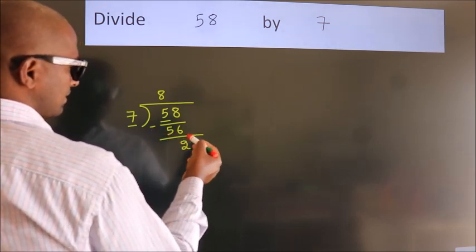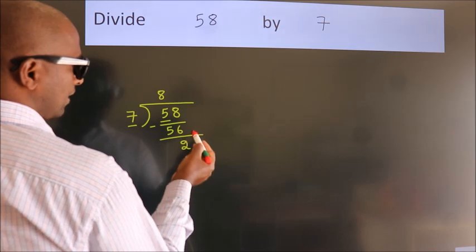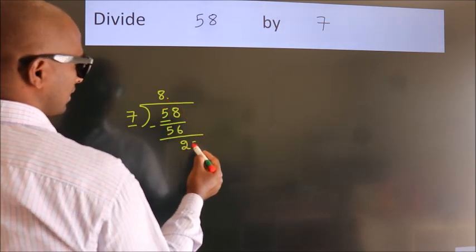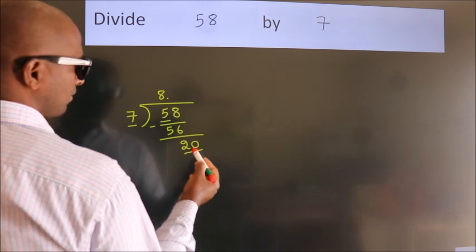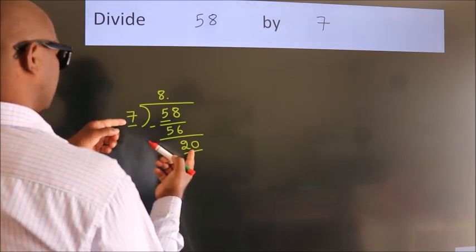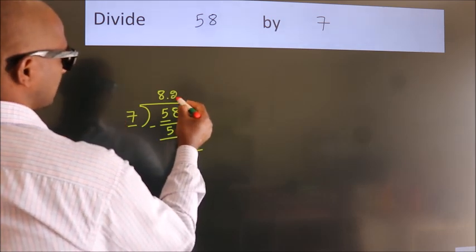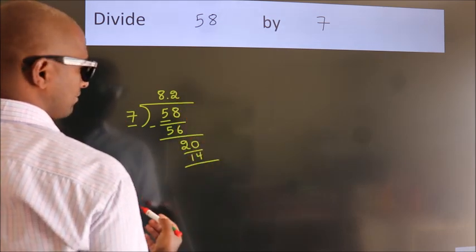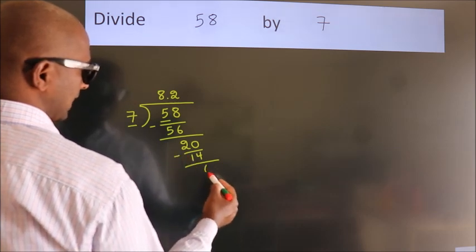After this, no more numbers to bring down. So what we do is put a dot and take 0. So, 20. A number close to 20 in the 7 table is 7 times 2, which is 14. Now we subtract and get 6.